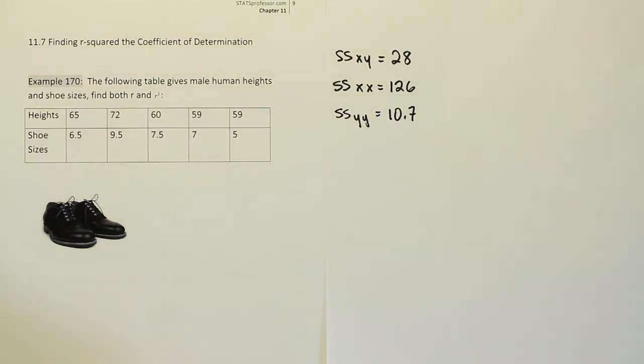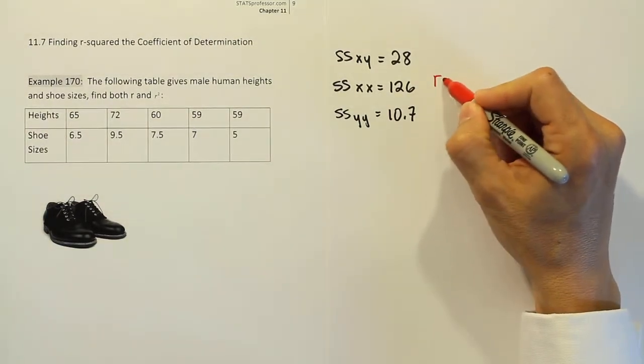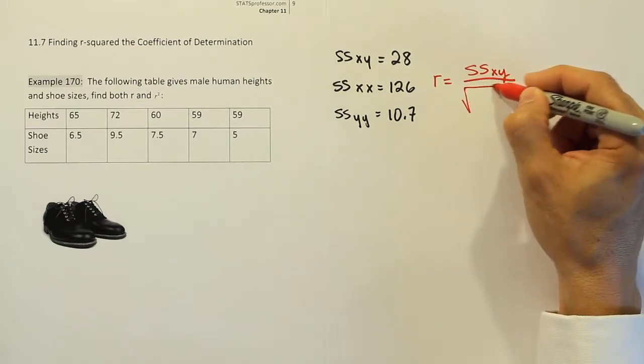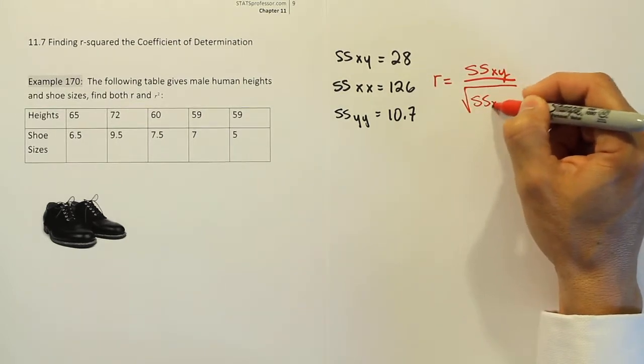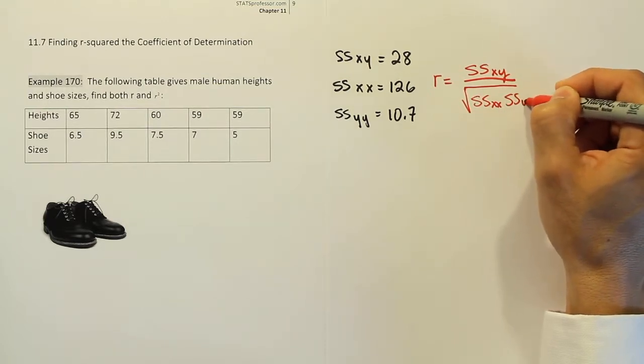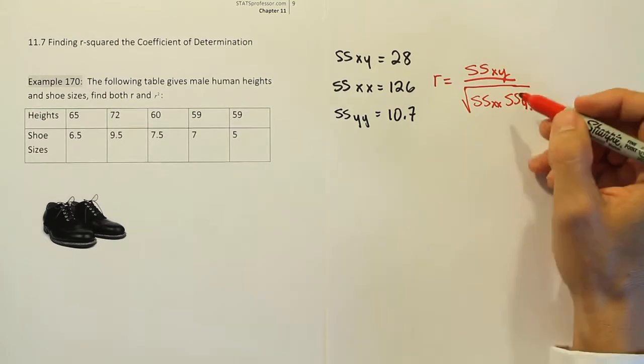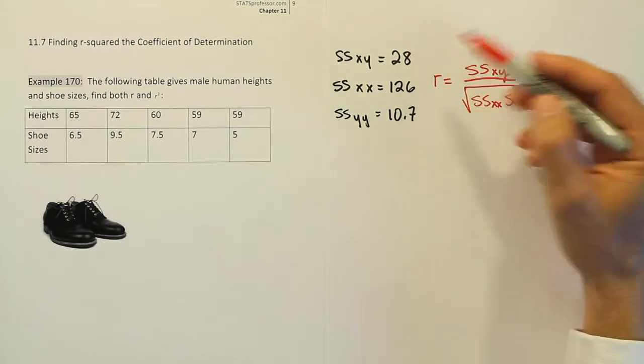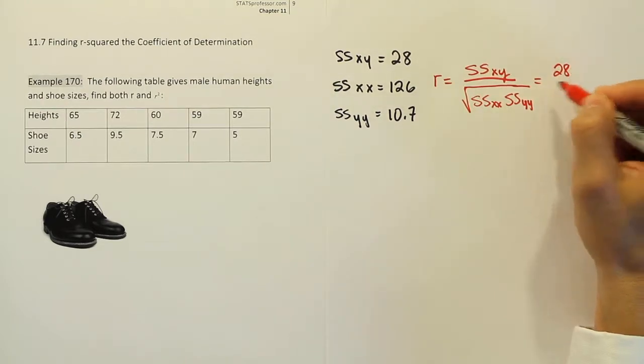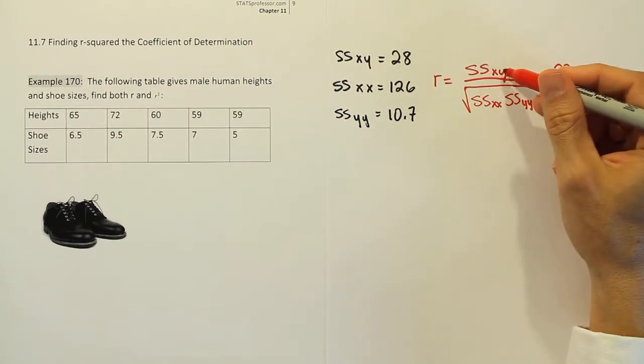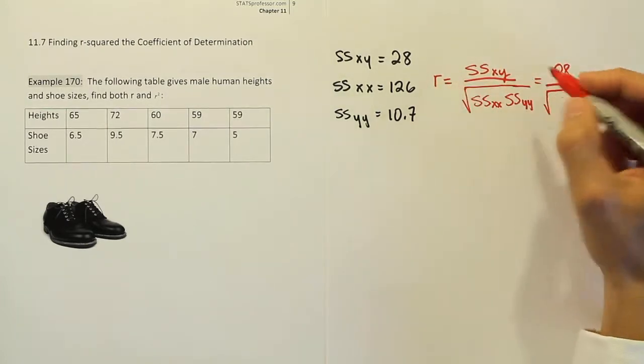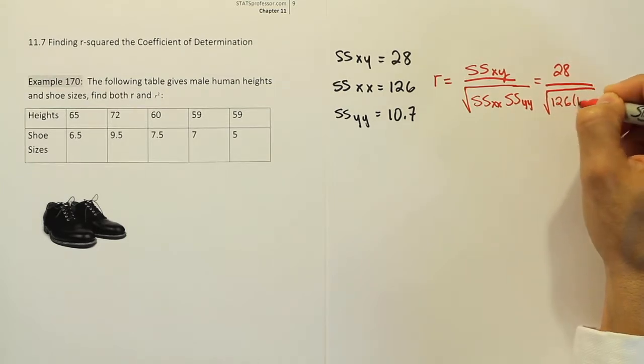Now I'm going to do r first. r, remember, is just a simple formula. The formula is the mixed term on top of a fraction with a denominator that has ssxx under a square root, multiplied by ssyy under that same square root. When we plug those numbers in for this particular problem, we come up with the answer 28. Let's pause here for a minute and remind ourselves that when this mixed term xy is positive, r is going to be positive. Then we plug in the rest of the numbers here, 126 times 10.7.